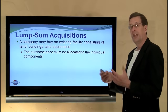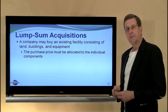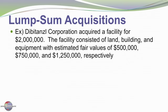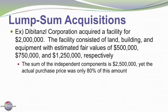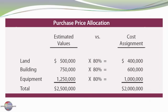Sometimes assets might be purchased in a lump sum. A company may buy an existing facility consisting of land, buildings, and equipment, and the purchase price must be allocated to those individual components. Debensal Corporation acquired a facility for $2 million. The facility had respective fair values of $500,000 for land, $750,000 for buildings, and $1,250,000 for equipment — totaling $2,500,000 — so Debensal got a bargain purchase at 80% of fair value. We multiply the fair value of each component by 80% to arrive at the cost assignment to each individual asset.